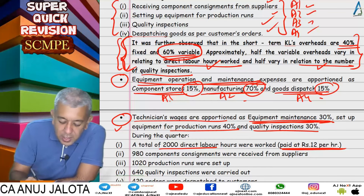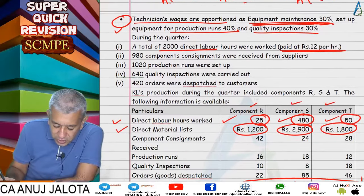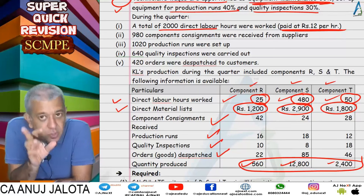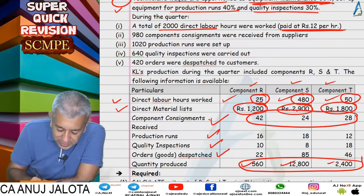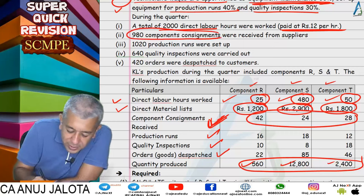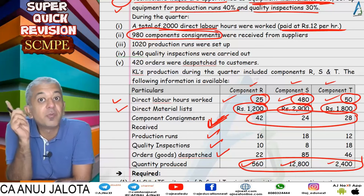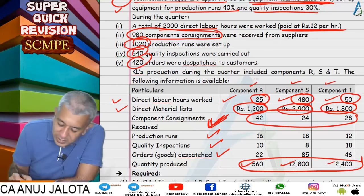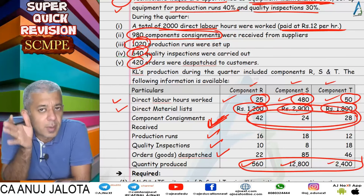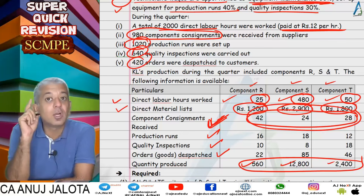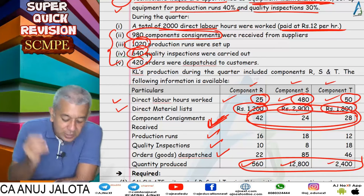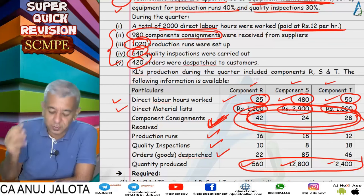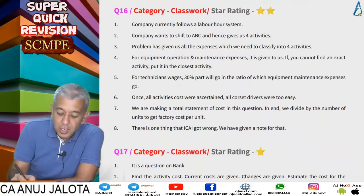Cost drivers were easy to identify: A1 — number of component consignments received; A2 — number of production runs; A3 — number of quality inspections; A4 — number of dispatches. Important: when calculating the cost driver rate, divide the activity cost by the company's total number of transactions, not just the total of the three products R, S, T — because the company manufactures over 100 types of products.